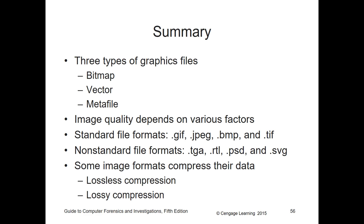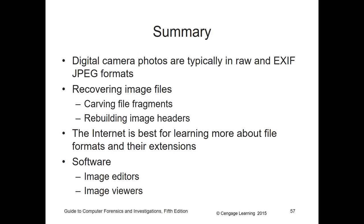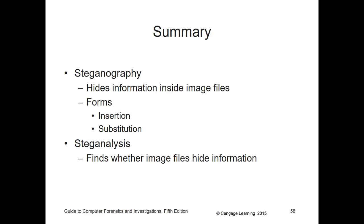That's the end of this chapter. We talked about the various types of graphic files: bitmaps, vectors, and metafiles. We discussed compression — lossless versus lossy — and types of formats: raw, EXIF, and JPEG. We covered recovering image files, and we ended with steganography and stego-analysis. If you have any questions, please let me know. Thank you.